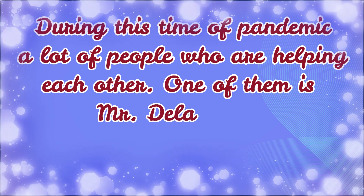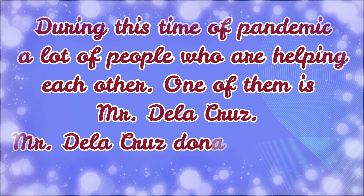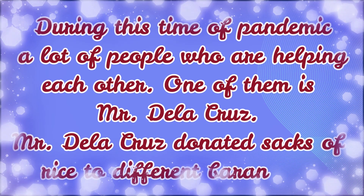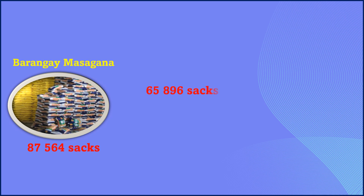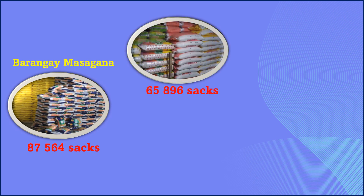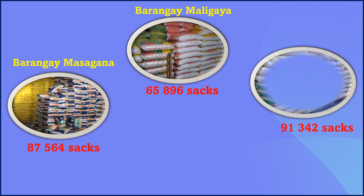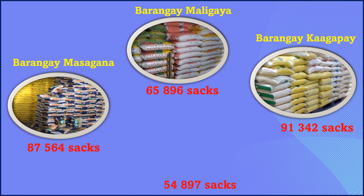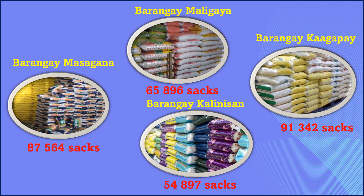One of them is Mr. De la Cruz. Mr. De la Cruz donated sacks of rice to four barangays: 87,564 sacks to Barangay Masagana, 65,896 sacks to Barangay Maligaya, 91,342 sacks to Barangay Kaagapay, and 54,897 sacks to Barangay Kalinisan. Arrange the numbers of sacks in increasing and decreasing order.